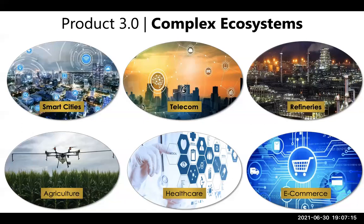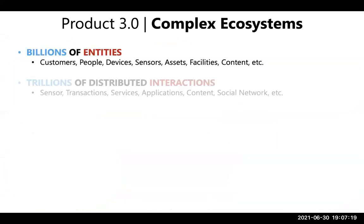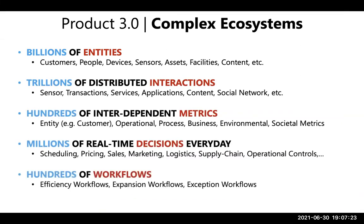What makes these systems complex? Billions of entities — customers, people, devices in a telecom network — with trillions of interactions happening all the time: sensor IoT data, transactions like payments, plan upgrades, phone calls, care center calls, operational events like changing a cell tower. All these transactions and interactions are distributed and happening continuously.